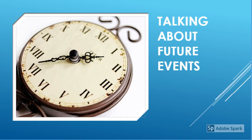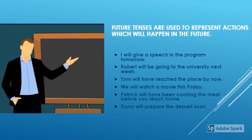The first part of this video lesson is focusing your attention on talking about future events. Future tenses are used to represent actions which will happen in the future. The activities that we hope to do or the activities that we have already planned to do in the future can be expressed through future tenses.